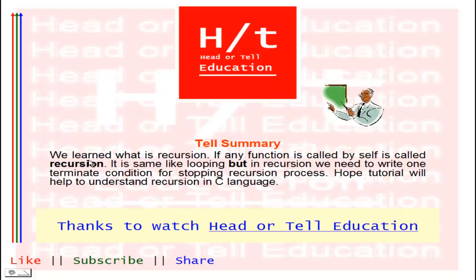In summary: recursion is when any function is called by itself. It is similar to looping, but in recursion we need to write one terminate condition to stop the recursion process. This tutorial helps you understand recursion in C language. Thanks for watching Head or Tail Education.